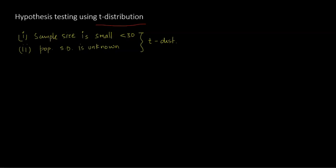In all six steps, when you are calculating a t-score, the formula remains absolutely the same as it was for the z-score. It is x-bar minus mu divided by the sample standard deviation divided by square root of n.